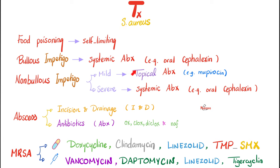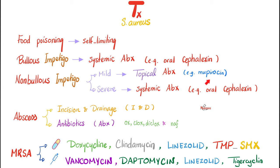Management of Staph aureus: food poisoning is self-limiting — just supportive care. Bullous impetigo is more severe than non-bullous, which is why with bullous you always go with systemic antibiotics. Non-bullous: if mild, topical; if severe, systemic. So severe non-bullous and bullous are treated the same way.